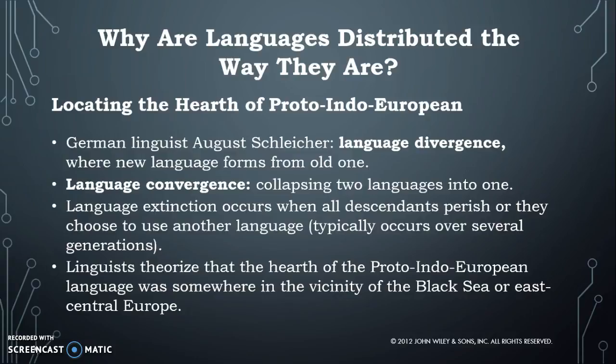Looking at the hearth of Proto-Indo-European, linguist August Schleicher talks about language divergence — when a new language is formed by splitting off from an old one. Language convergence, on the other hand, is what happens when two languages collapse into one. This is what we see with a creole language — a language that started as two languages that then developed the ability to communicate with each other, adopting common words from both, until it became its own distinct language.